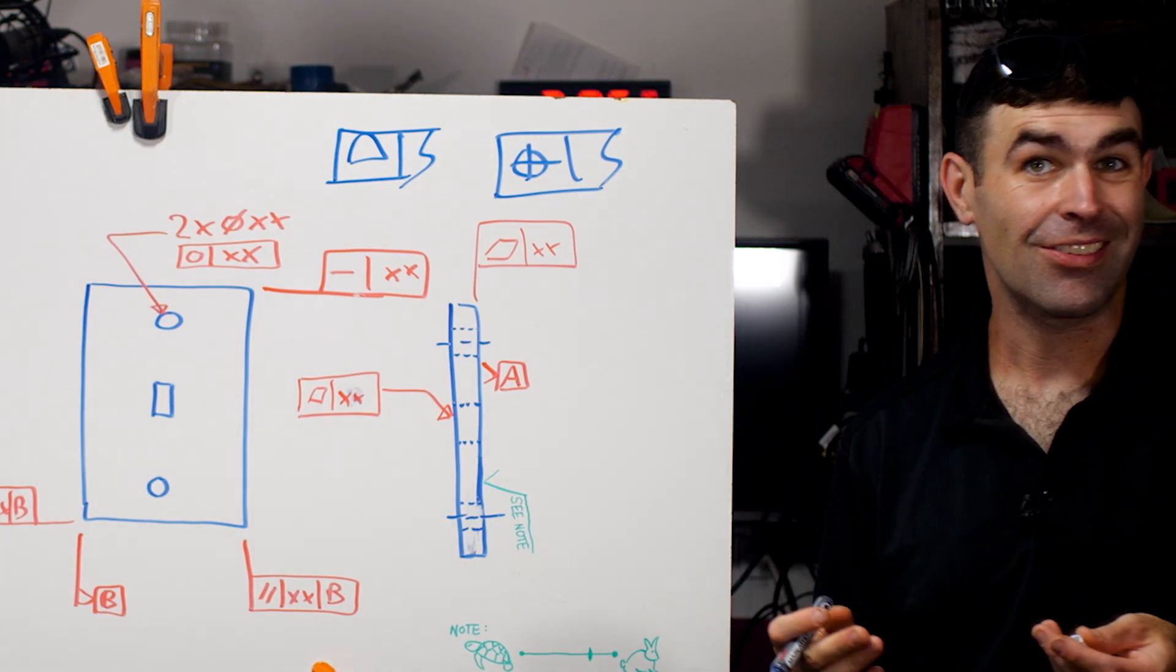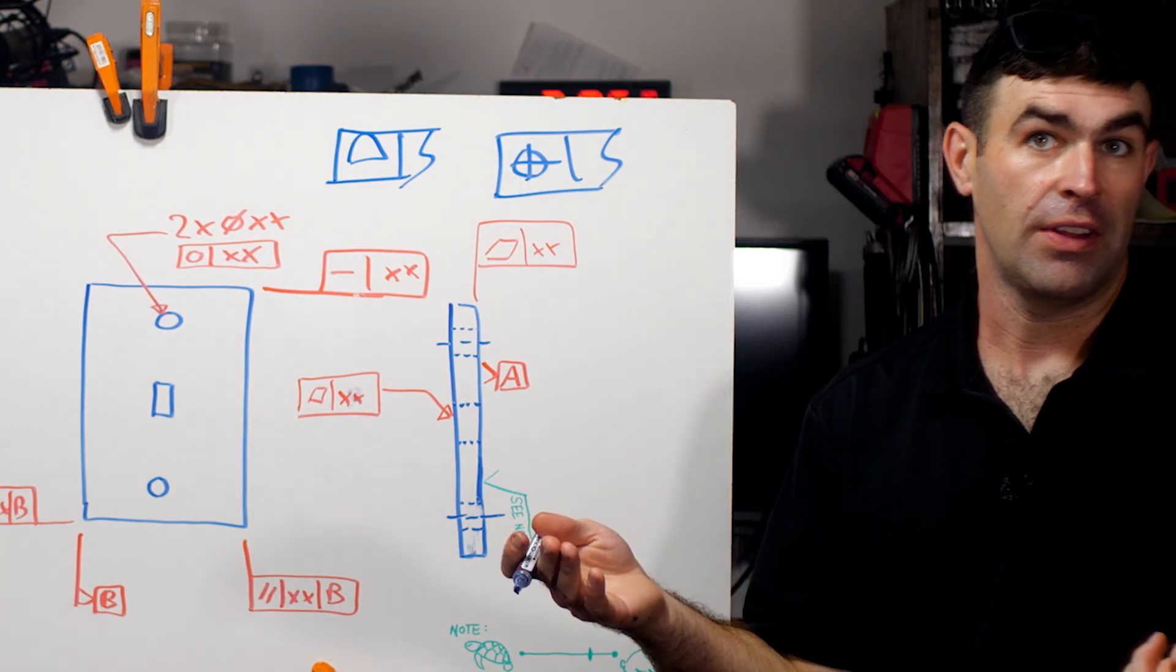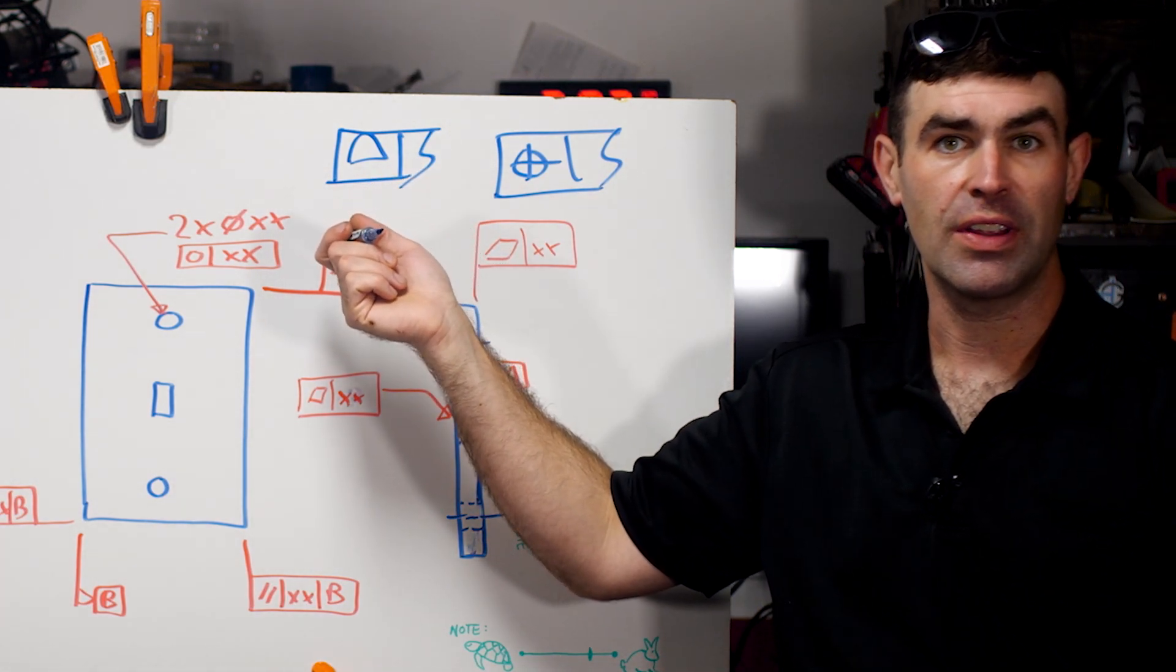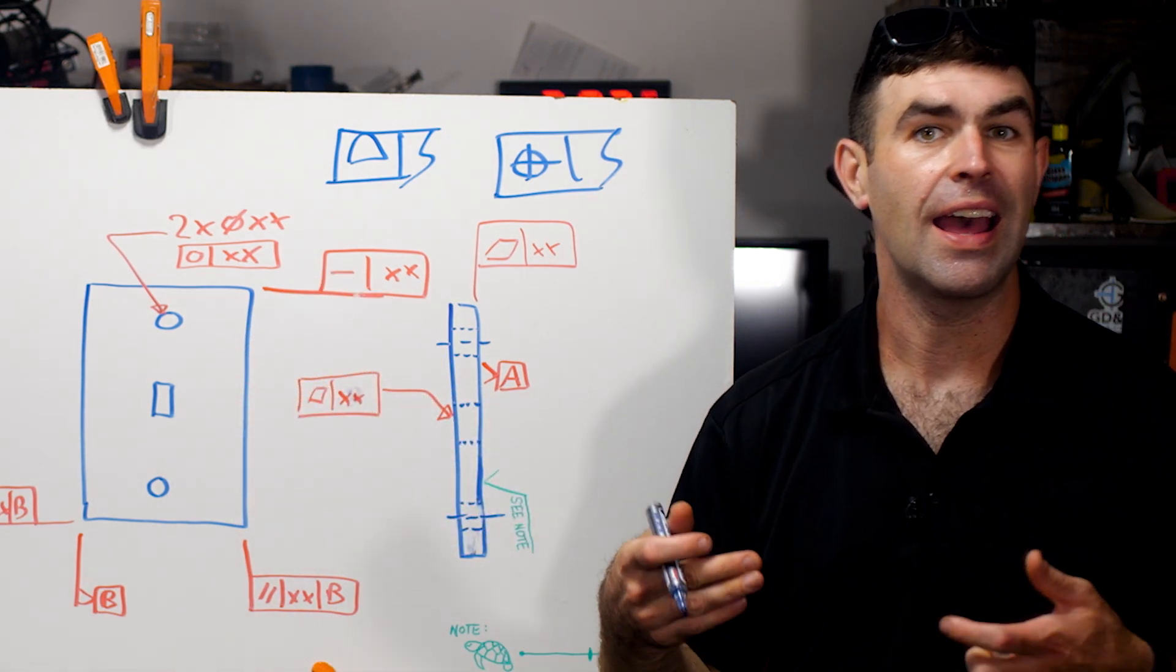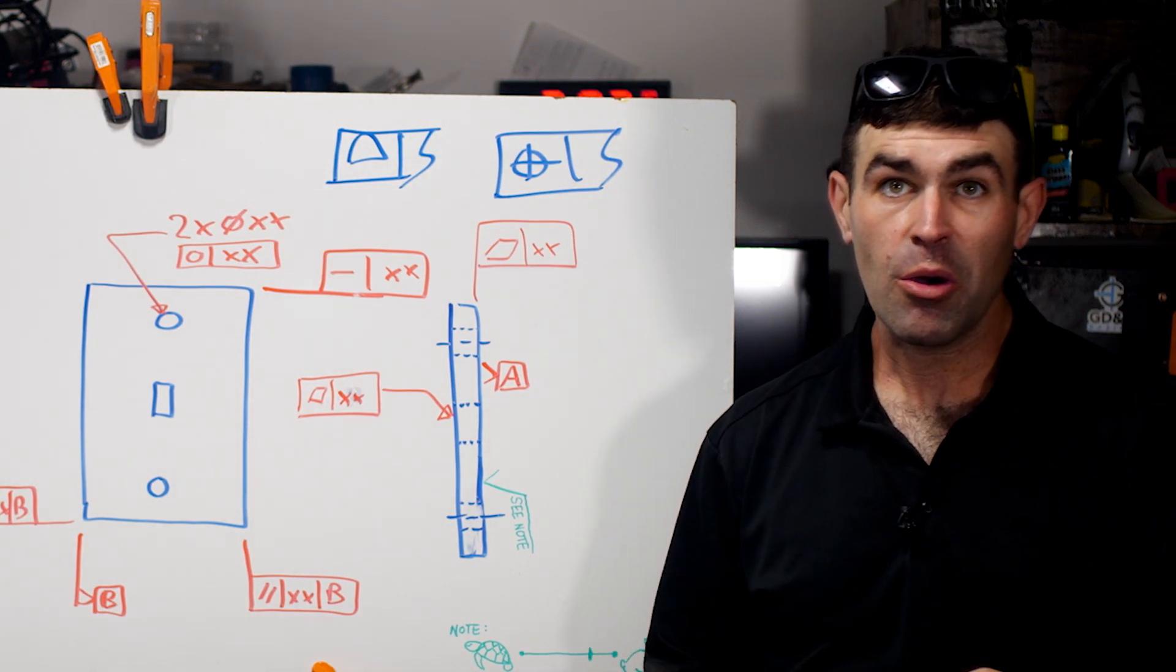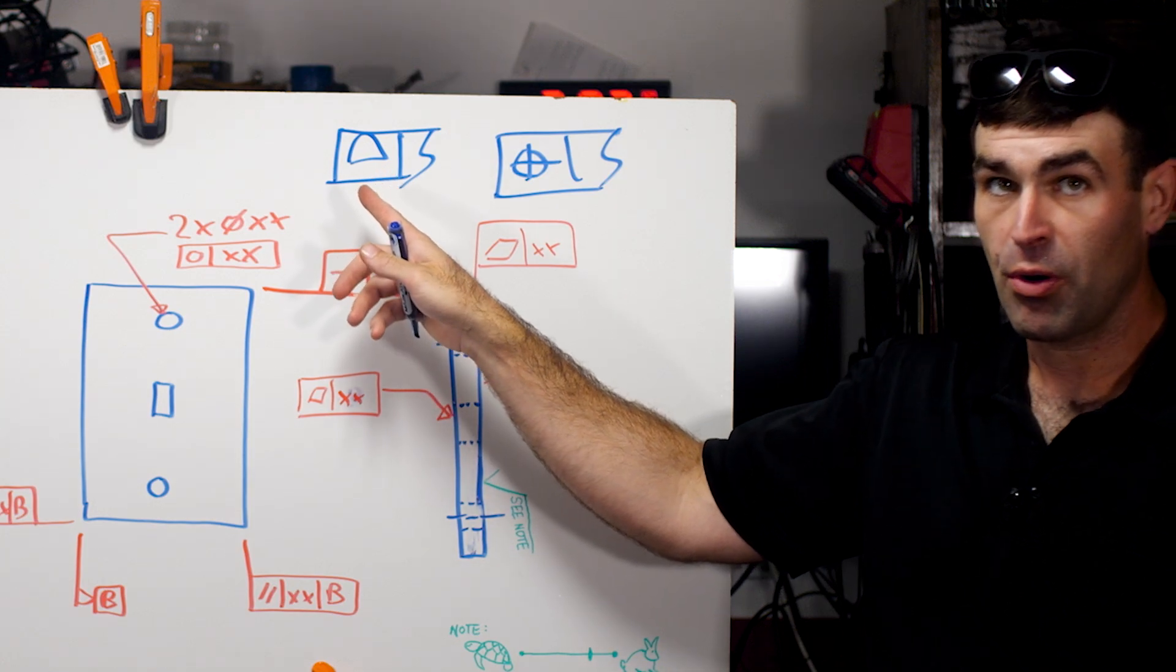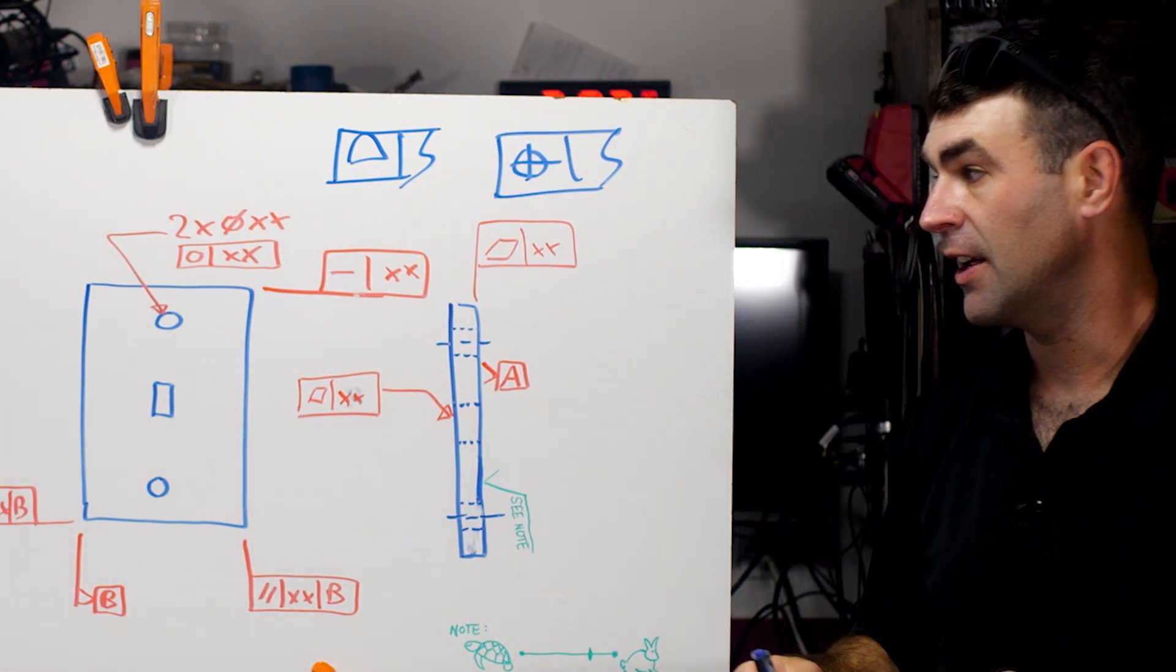Their meanings are somewhat clear as opposed to symbols like profile of a surface or position. Those meanings are not so clear if you don't know what you're looking at. It's not really clear what that means right off the bat, as it would be for straightness. By the end of the video, hopefully I can explain why you should really be looking to learn how to use profile and position and then start incorporating these.